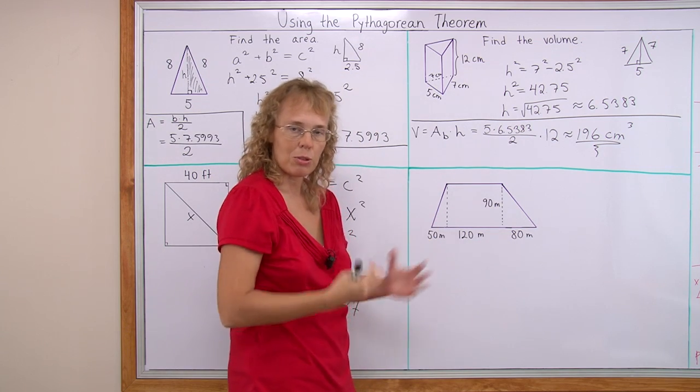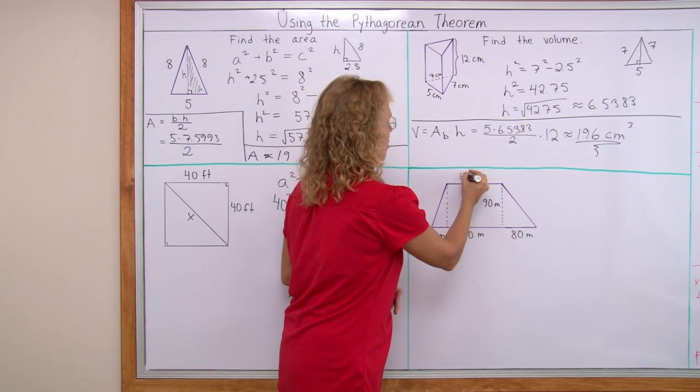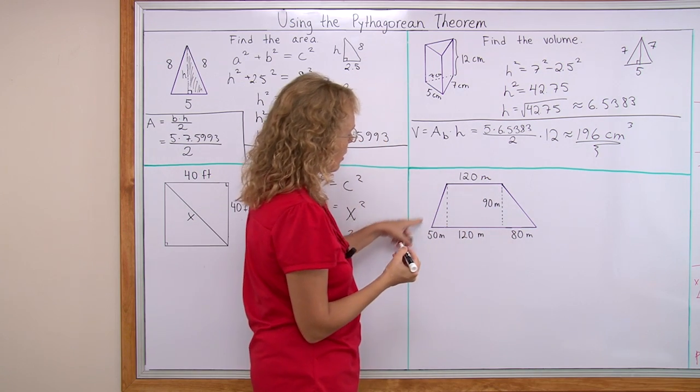so that I can add all those side lengths together. Now, this here is easy, it's of course 120m, but what about this here?